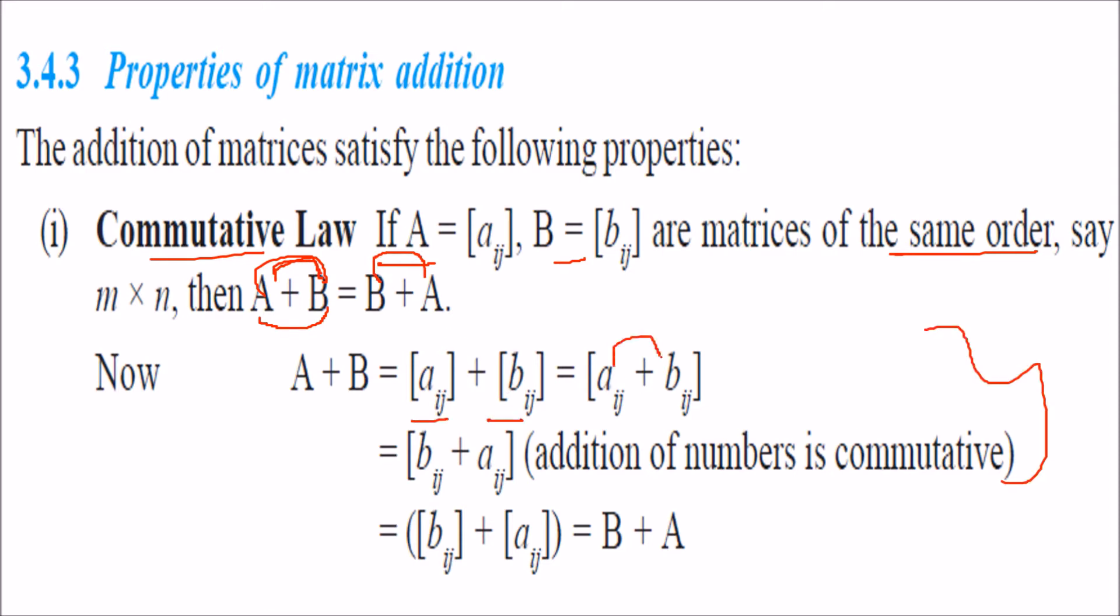You are adding the elements. You can say 2 plus 3 can be written as 3 plus 2, no change with that. Addition is commutative inside, so bᵢⱼ and aᵢⱼ, these are nothing but the values of B and A.